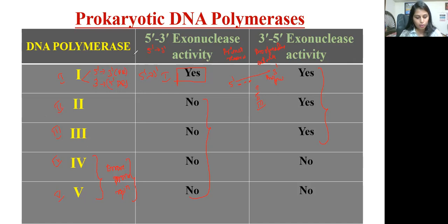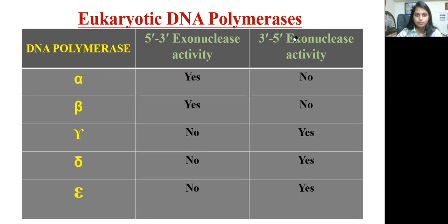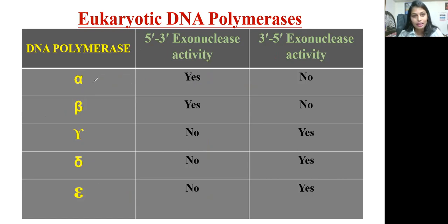Now moving on to the eukaryotic DNA polymerases. Similar to prokaryotes, eukaryotes also have five different types of DNA polymerases: alpha, beta, gamma, delta, and epsilon.